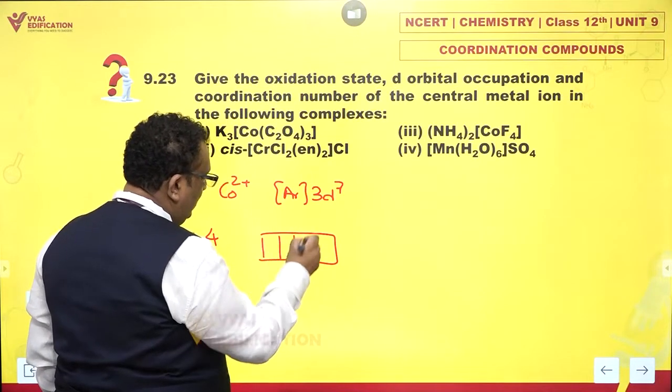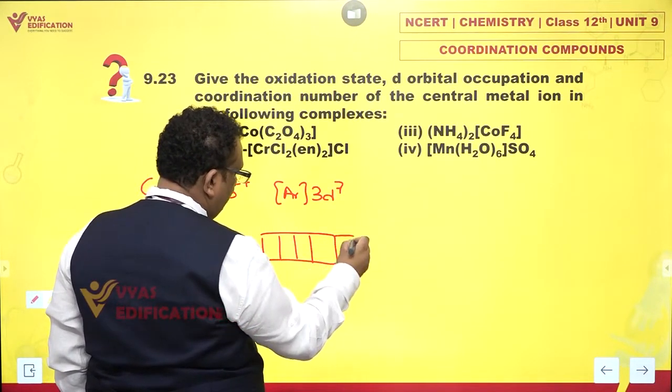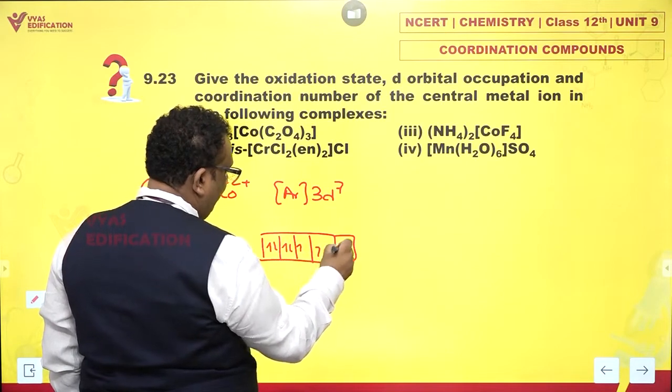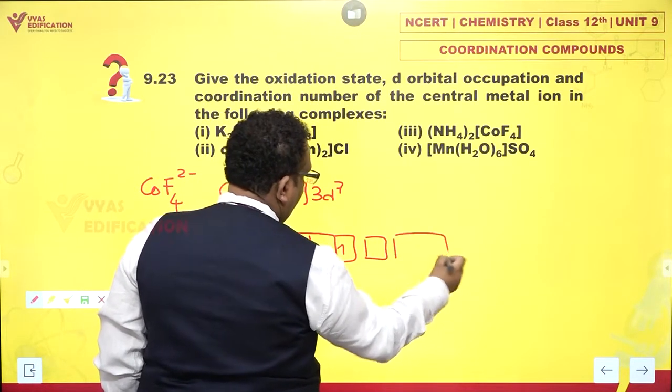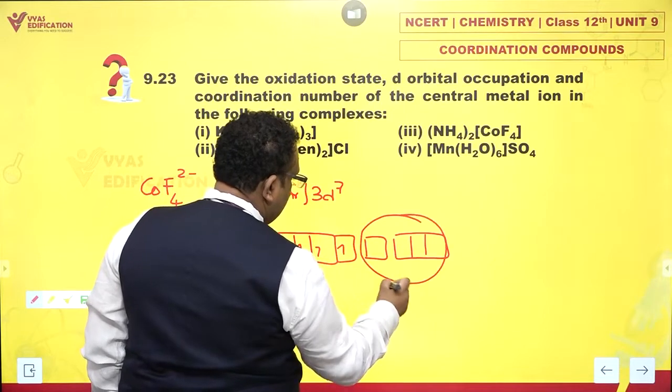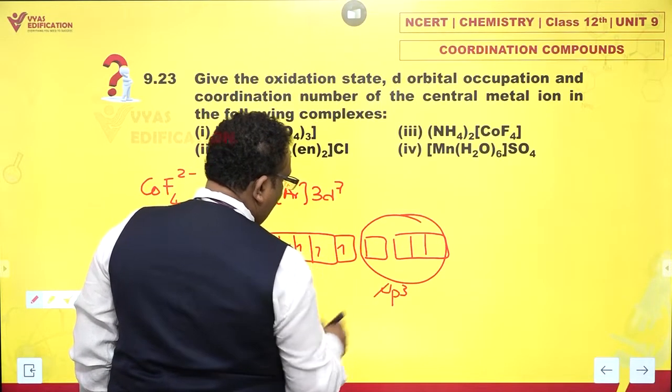1, 2, 3, 4, 5, 6, 7. We just need 4 orbitals. So, hybridization will be simply SP3.